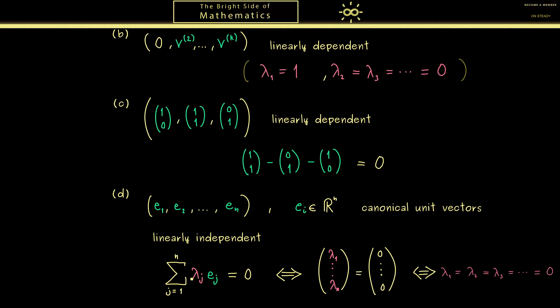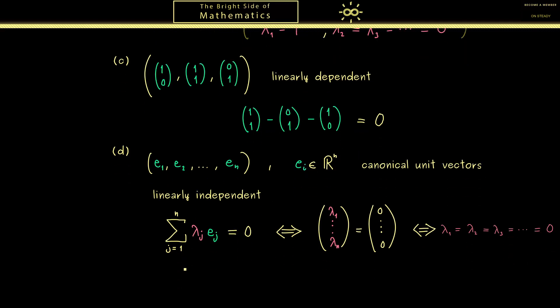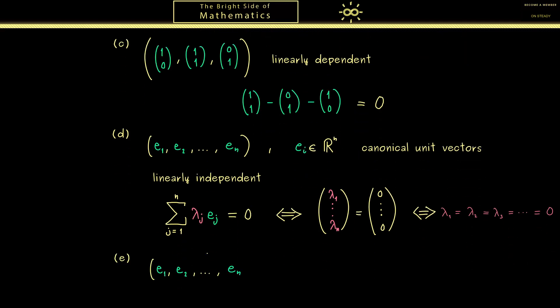OK, now moreover, this also gives us another important example. Namely, we know what happens when we add any vector v here to the end of the family. Then we know, we can choose the coefficients in front of the canonical unit vectors in such a way, that we get a linear combination for the vector v. In other words, such a general family then has to be linearly dependent.